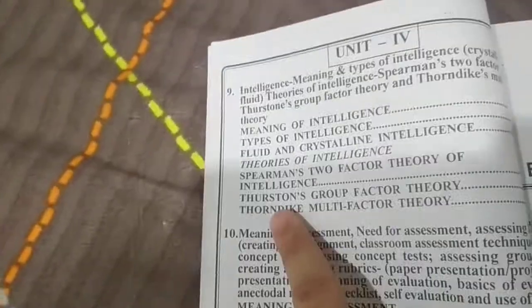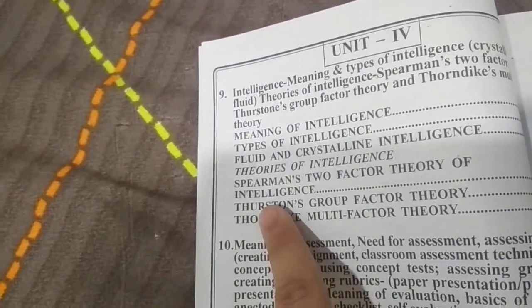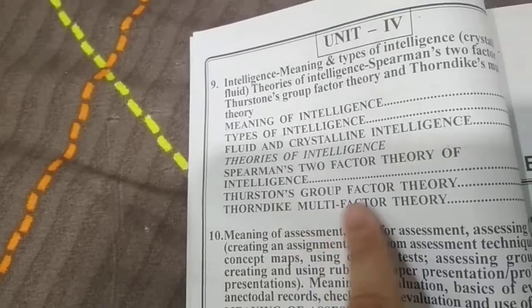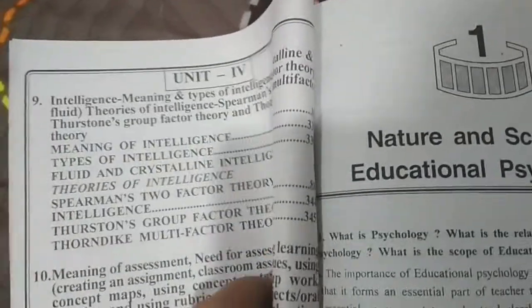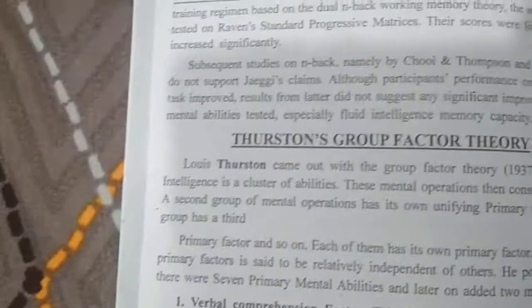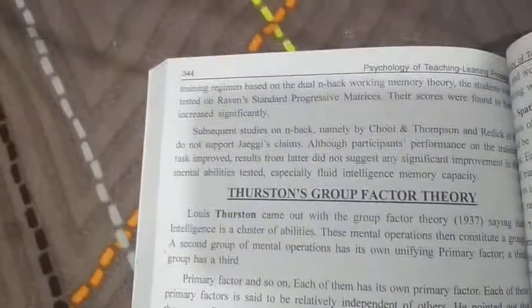And finally, let's check the last one in Unit 4 — Thurston's Group Factor Theory, which is listed at page 344. Let's check page 344. Thurston's Group Factor Theory — everything is clear and it's all there.